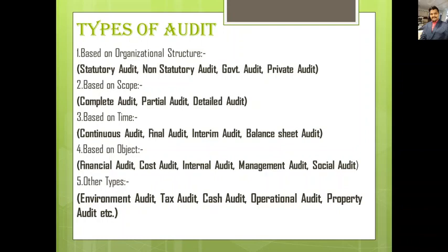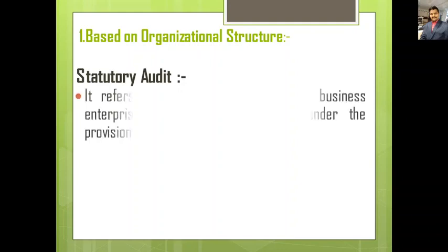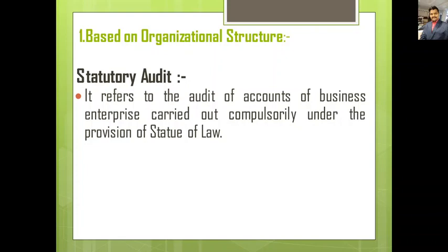The first type of audit is based on organizational structure. Under organizational structure, the two most important sub-types are statutory audit and non-statutory audit. Statutory audit refers to the audit of accounts of business enterprises carried out compulsorily — the word 'compulsory' is most important — under the provisions of statute, meaning law.